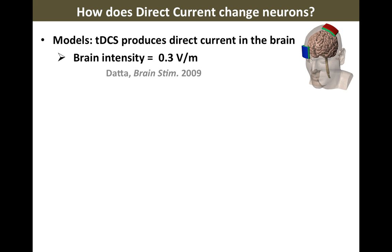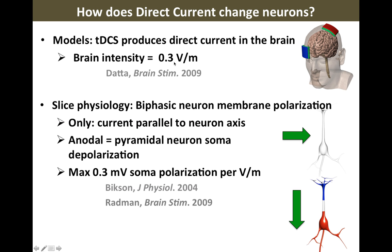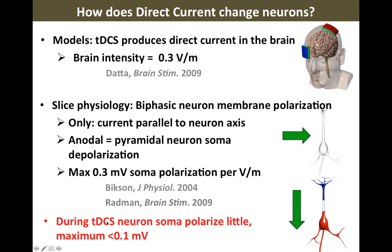What does this mean for tDCS? In tDCS, we apply about 1 milliamp of current. At the brain, that produces about 0.3 volts per meter — that is the intensity the cells in the brain are being exposed to. We know this current flow will produce cell polarization when it flows along the direction of the cells: anodal produces soma depolarization, cathodal produces soma hyperpolarization. The most sensitive cells polarize about 0.3 millivolt per volt per meter. Combining this sensitivity with the actual exposure gives us a value: during tDCS, the most sensitive neuron in the most sensitive part of the brain will polarize just a little bit — less than 0.1 millivolt.